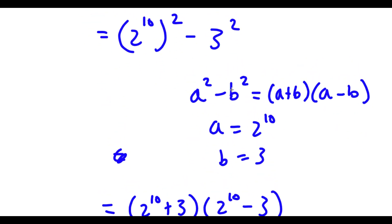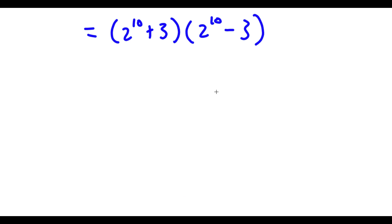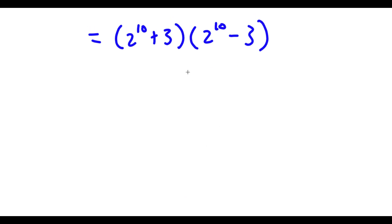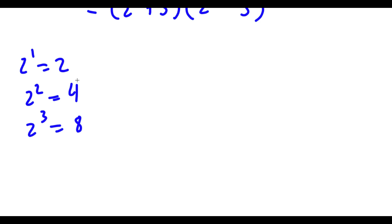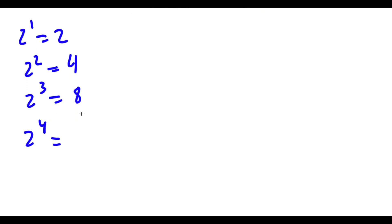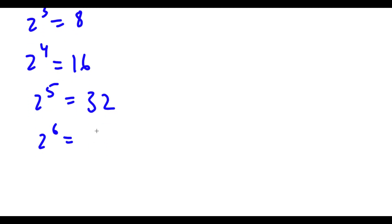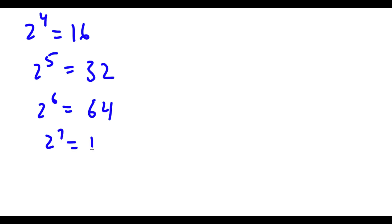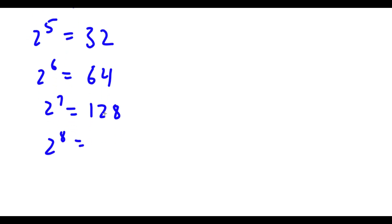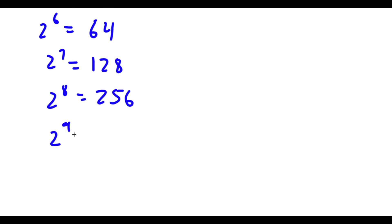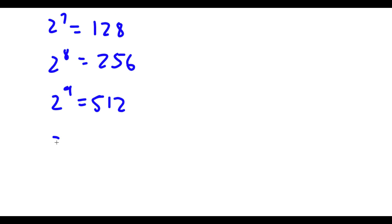Now let's simplify 2 to the power of 10. 2 to the power of 1 is 2, 2 to the power of 2 is 4, 2 to the power of 3 is 8. Notice how every time it doubles. So 2 to the power of 4 is 16, 2 to the power of 5 is 32, 2 to the power of 6 is 64, 2 to the power of 7 is 128, 2 to the power of 8 is 256, 2 to the power of 9 is 512, and finally 2 to the power of 10 is double 512, which is 1024.